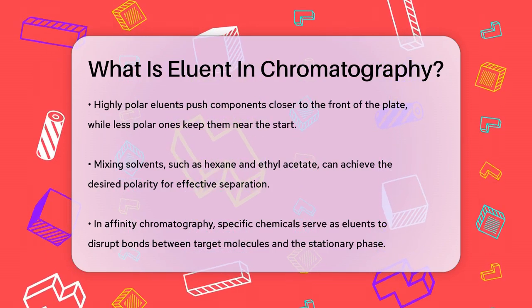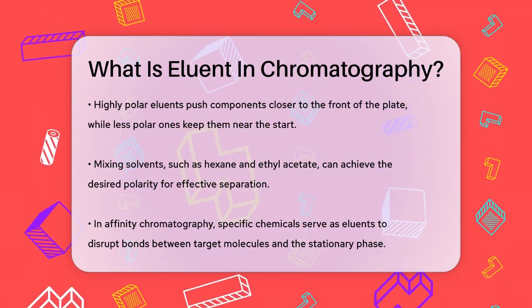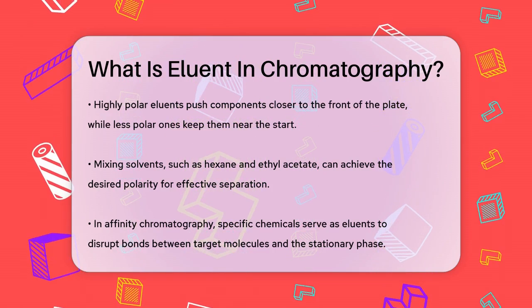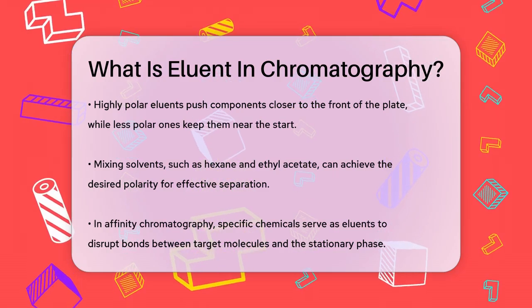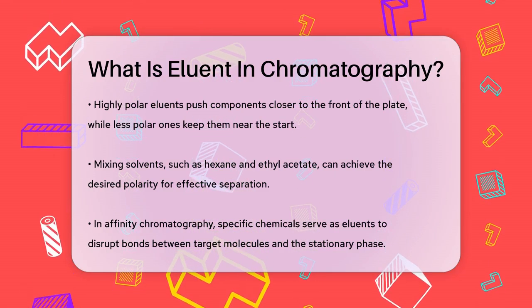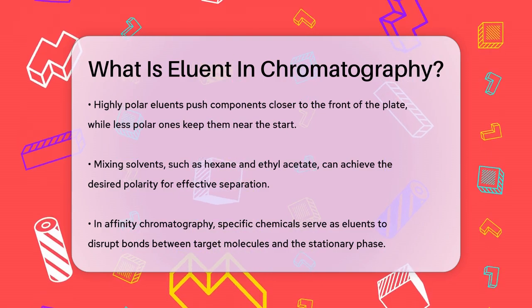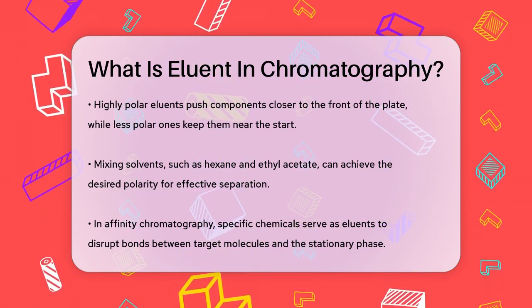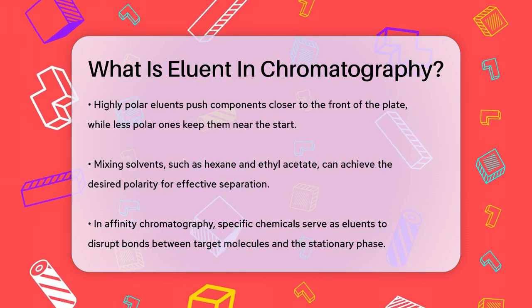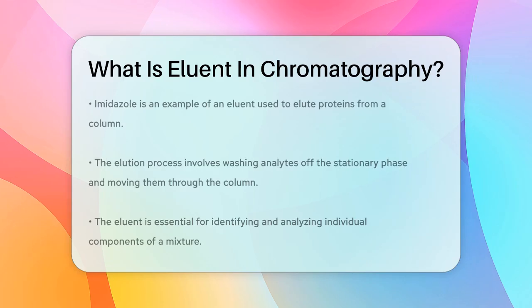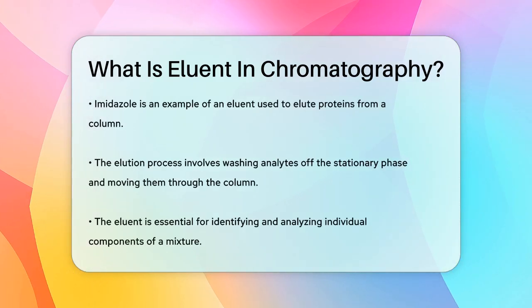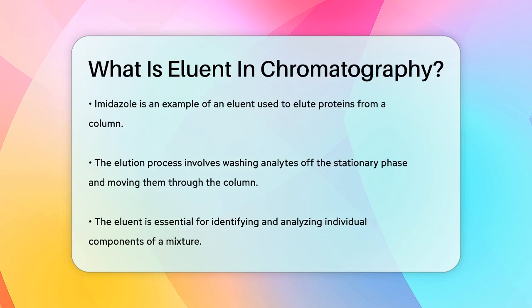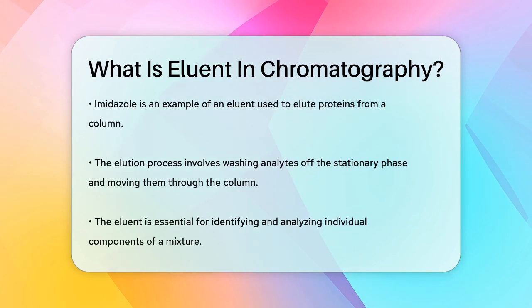In other types of chromatography, like affinity chromatography, the eluent can be a specific chemical that breaks the bond between the target molecule and the stationary phase. For instance, imidazole can be used to elute proteins from a column. The eluent's role is to wash the analytes — the substances you're trying to separate — off the stationary phase and carry them through the column.